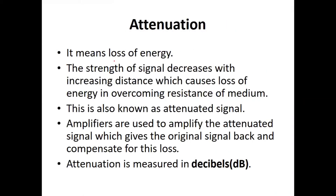Attenuation means loss of energy. The strength of the signal decreases with increasing distance, which causes loss of energy in overcoming the resistance of the media. That type of signal is known as an attenuated signal. We can use amplifiers to amplify the attenuated signal, which gives the original signal back and compensates for this loss.